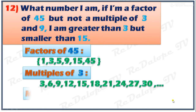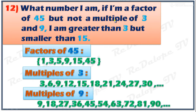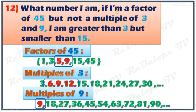The problem says the number we are looking for is a factor of 45 but not a multiple of 3 and not a multiple of 9, and it is greater than 3 but smaller than 15. From the factors of 45, the numbers greater than 3 but smaller than 15 are 5 and 9. From the multiples of 3: 6, 9, 12. From the multiples of 9: only 9. The number that is a factor of 45 but not a multiple of 3 and 9 is simply 5. The final answer is 5.